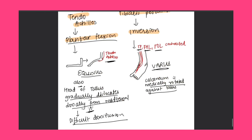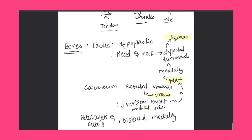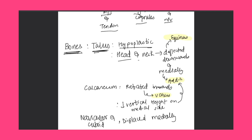Now coming to changes, divided into bony changes and soft tissue changes. In bony changes: the talus is hypoplastic. The head and neck of the talus are deflected downwards and medially — downward leads to equinus deformity, medial leads to adduction. The calcaneum is rotated inwards, leading to varus deformity, and the vertical height on the medial side of the calcaneum is reduced, which again leads to adduction.